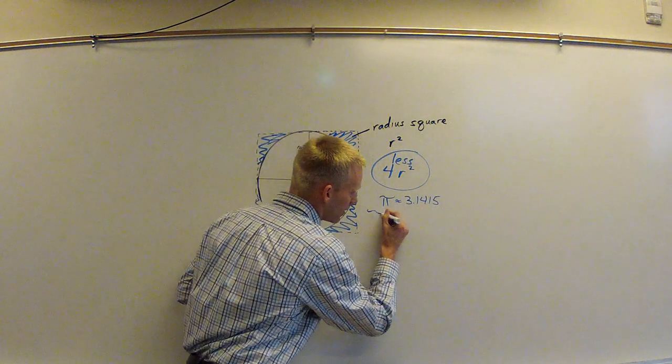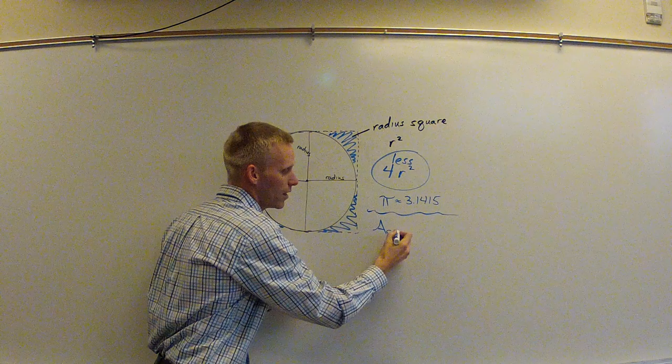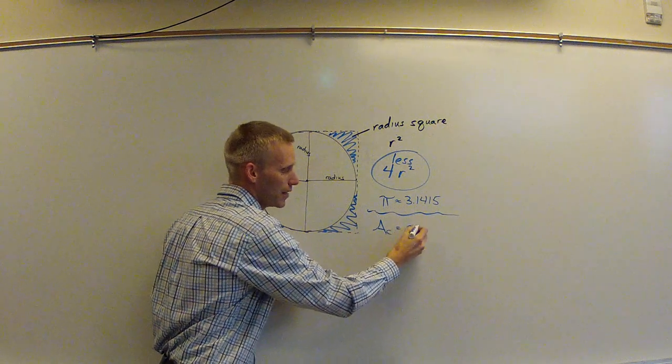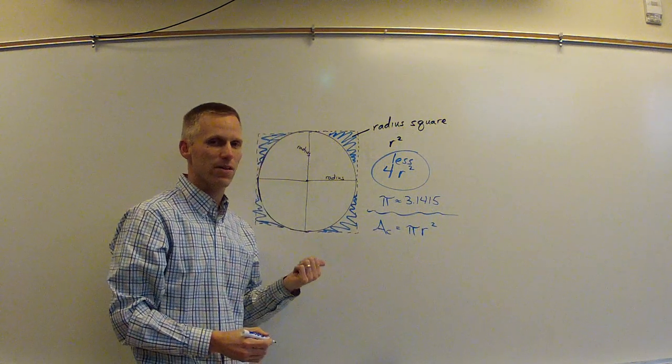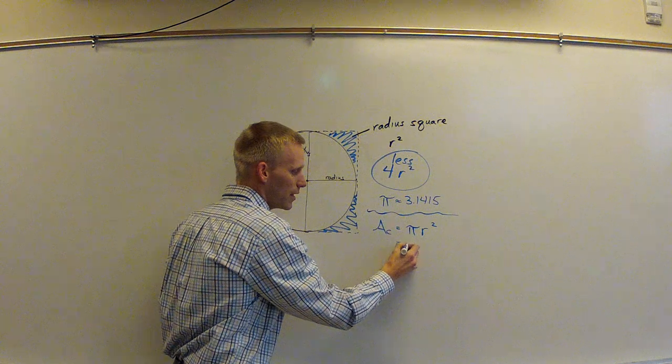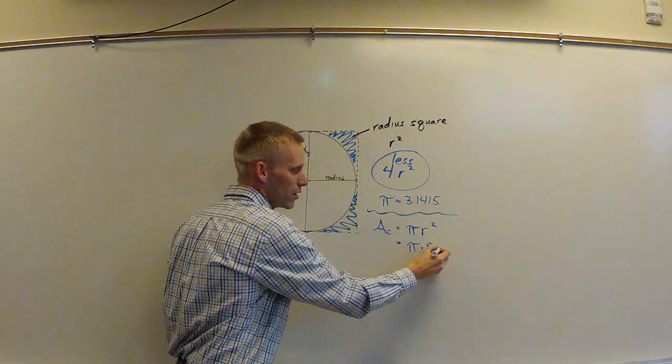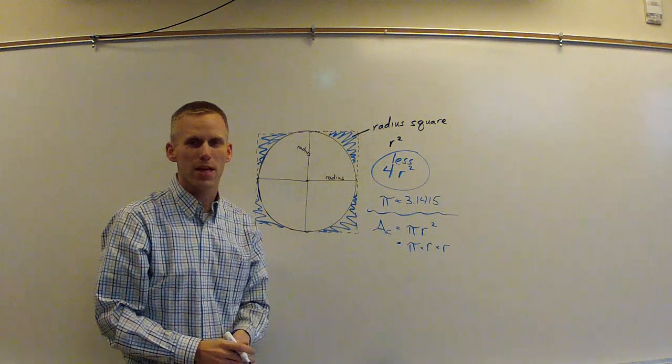So our formula ends up being for the area of a circle that there is pi, a little bit more than three of these radius squares inside of a circle. Some of you are going to want to write that as pi times r times r, and that would be the formula for the area of a circle.